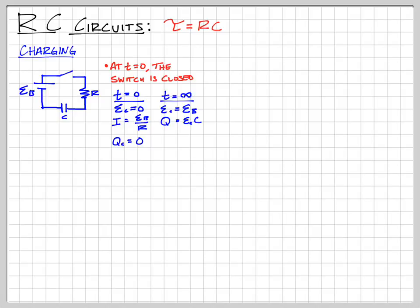Q is just going to be the EMF of the capacitor times the capacitance, and the current is zero because we're full and can't push any more charges onto the capacitor. Since the current started off full at EMF over R and died, it looks like exponential decay. The current is the original current times E to the negative T over tau, where tau is RC. If it's a more complicated circuit with two resistors, it would be two RC.